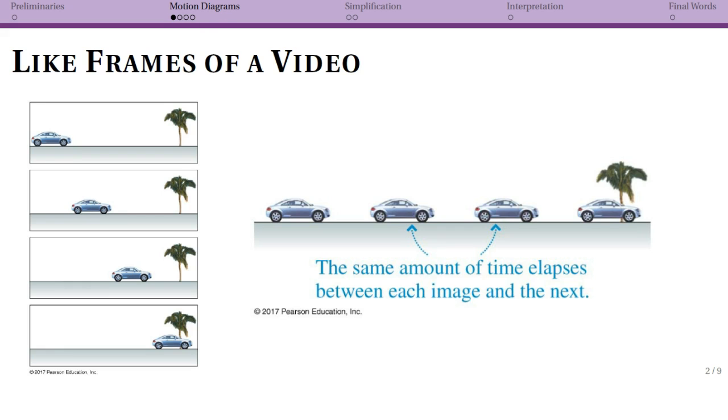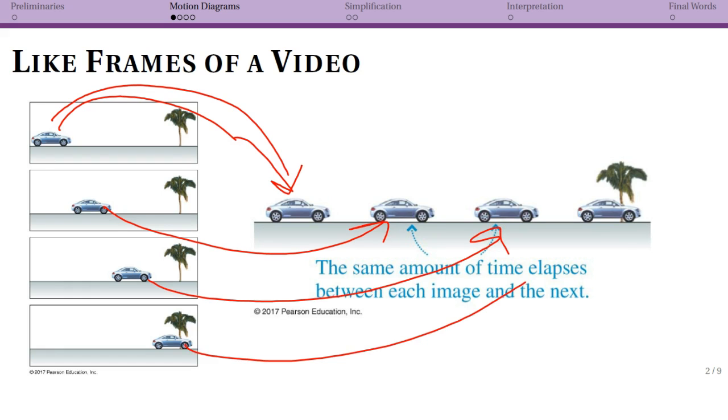What we are then doing for a motion diagram is instead of showing four separate pictures, we're just actually laying them on top of one another. So in this case you can see that our one box that we had before is now showing all four positions of the car and that you can see that it's still moving smoothly from left to right. One of the things that's important about this is that we have the same time interval between each one. We're going to talk about this time interval as delta t.